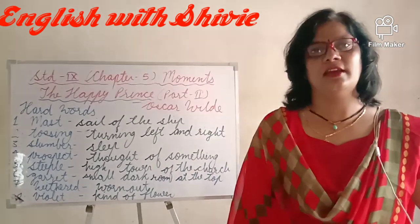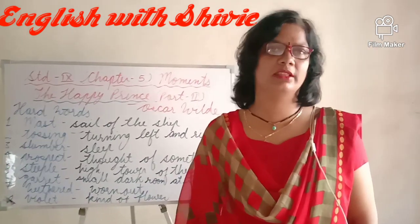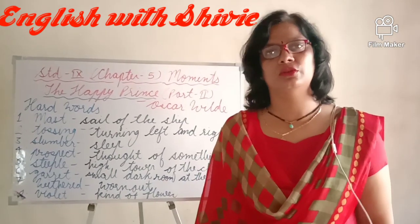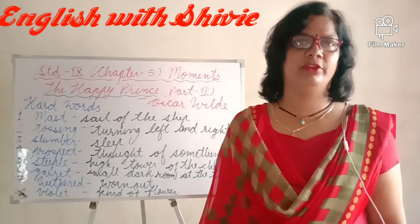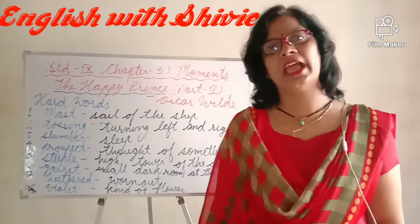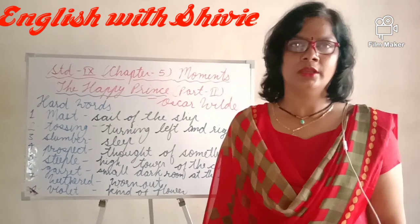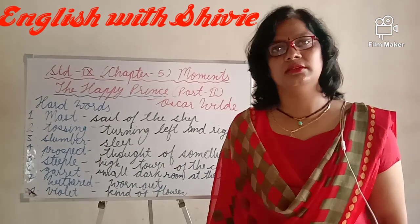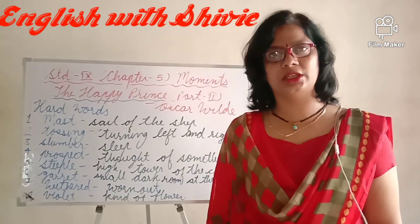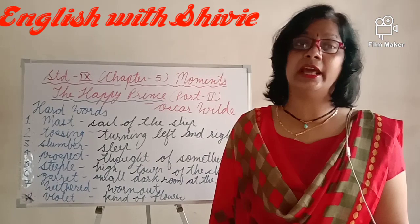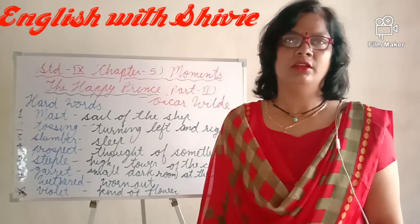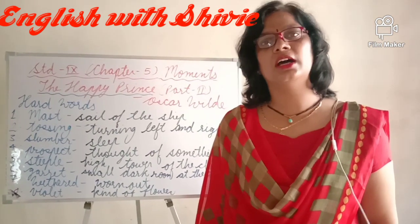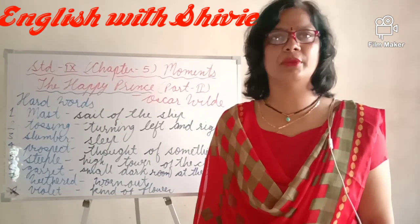Good morning children. Once again I am here in front of you to bring the chapter of Standard 9th from the book Moments. This is Part 2. In Part 1 we learned how the swallow and the Happy Prince met, what miseries the Happy Prince could see from the tall column, and how he gave all his valuable things from his sword to solve those miseries.